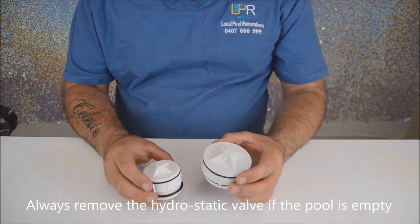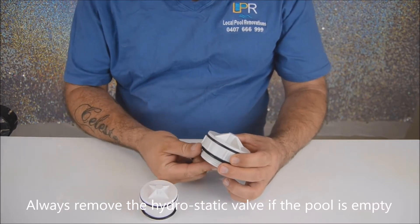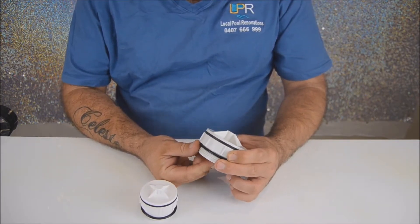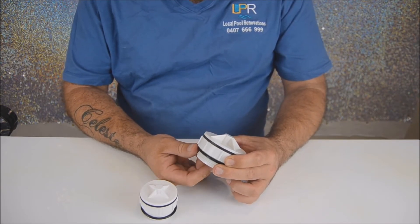The hydrostatic valve was designed for ground pressure to allow the water to come up through the hydrostatic valve and be released back into the swimming pool. This is to avoid your swimming pool from lifting and shifting.